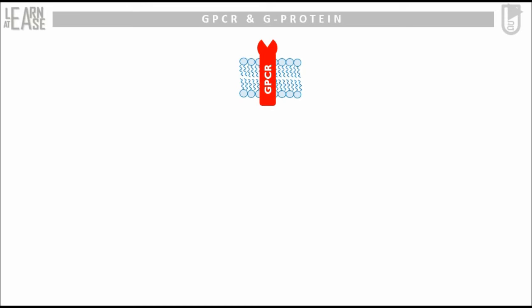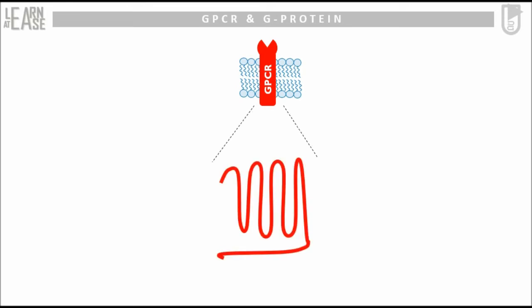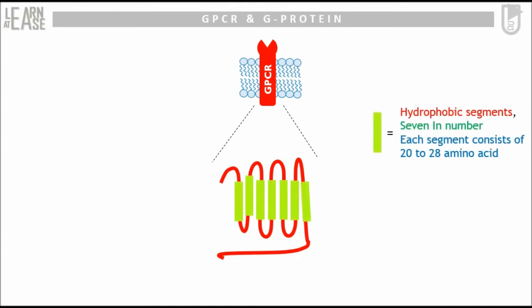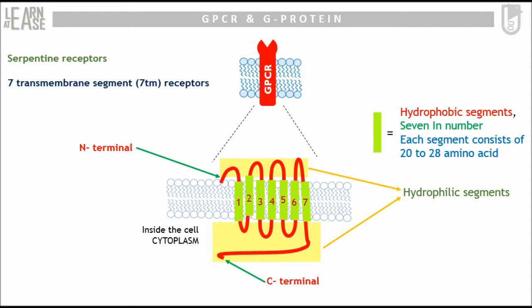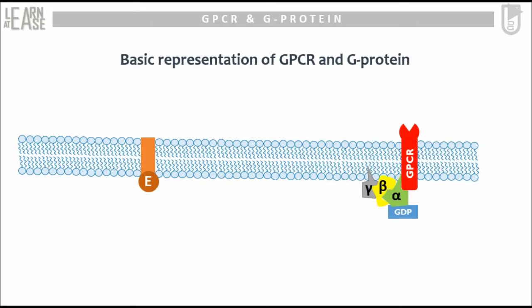In the animation, the GPCR is shown. This is a transmembrane protein possessing seven hydrophobic segments. Each of these hydrophobic segments consists of 20 to 28 amino acids and is embedded in the lipid bilayer. The hydrophilic regions are exposed on the exterior face of the cell and inside the cytoplasm. The N-terminal of GPCR is exposed outside the cell and the C-terminal is exposed in the cytoplasm. Other names for GPCR are serpentine receptor and 7-transmembrane segment receptor. In the absence of a ligand or hormone, this GPCR is bounded to a trimeric G-protein.